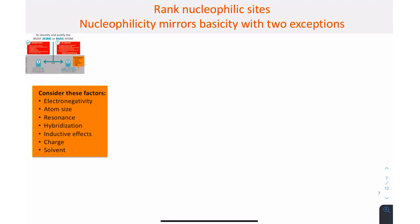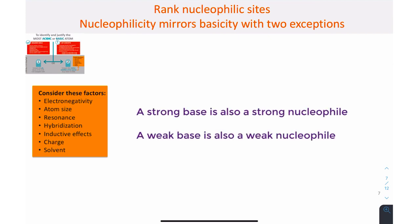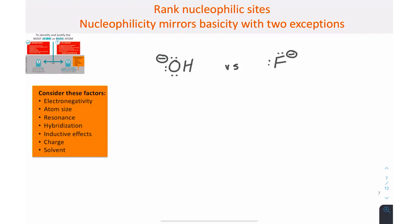First, to rank nucleophiles, know that nucleophilicity mirrors basicity, which means that a molecule or site that is a strong base is also going to be a strong nucleophile, and a weak base is a weak nucleophile. For example, if we compare hydroxide and fluoride, the more electronegative fluoride is a weaker base, it can better stabilize the electrons, than the less electronegative hydroxide.